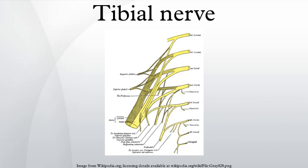The lateral plantar nerve supplies quadratus plantae, flexor digiti minimi, adductor hallucis, the interossei, three lumbricals, and abductor digiti minimi. Cutaneous innervation is to the lateral sole and lateral one and one half toes.